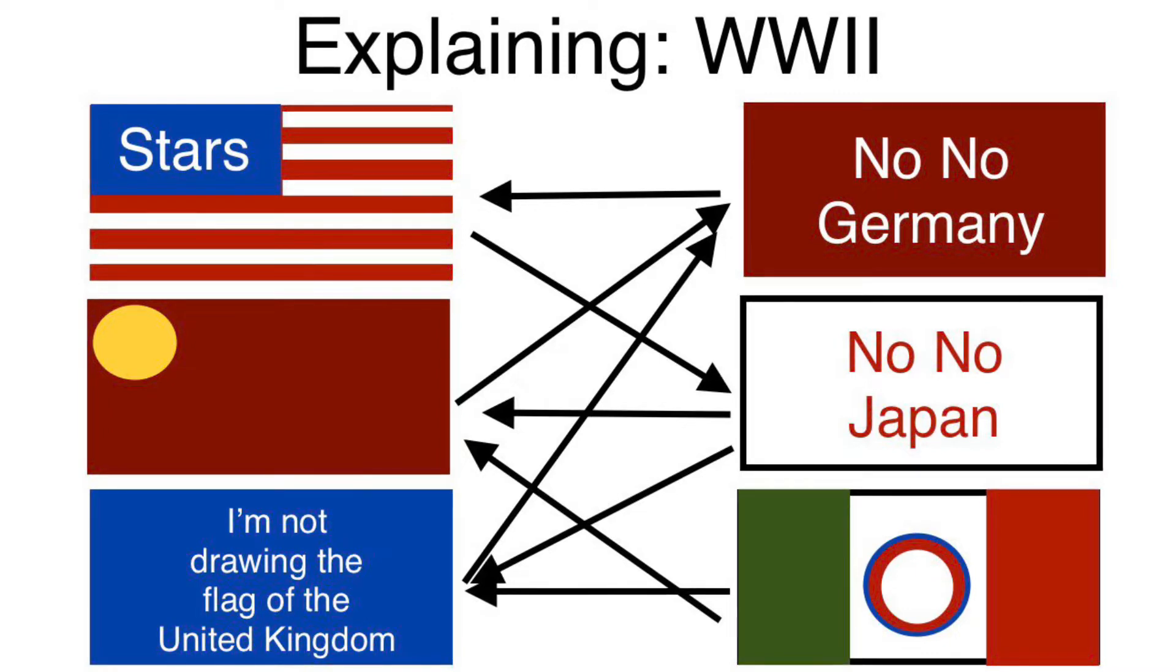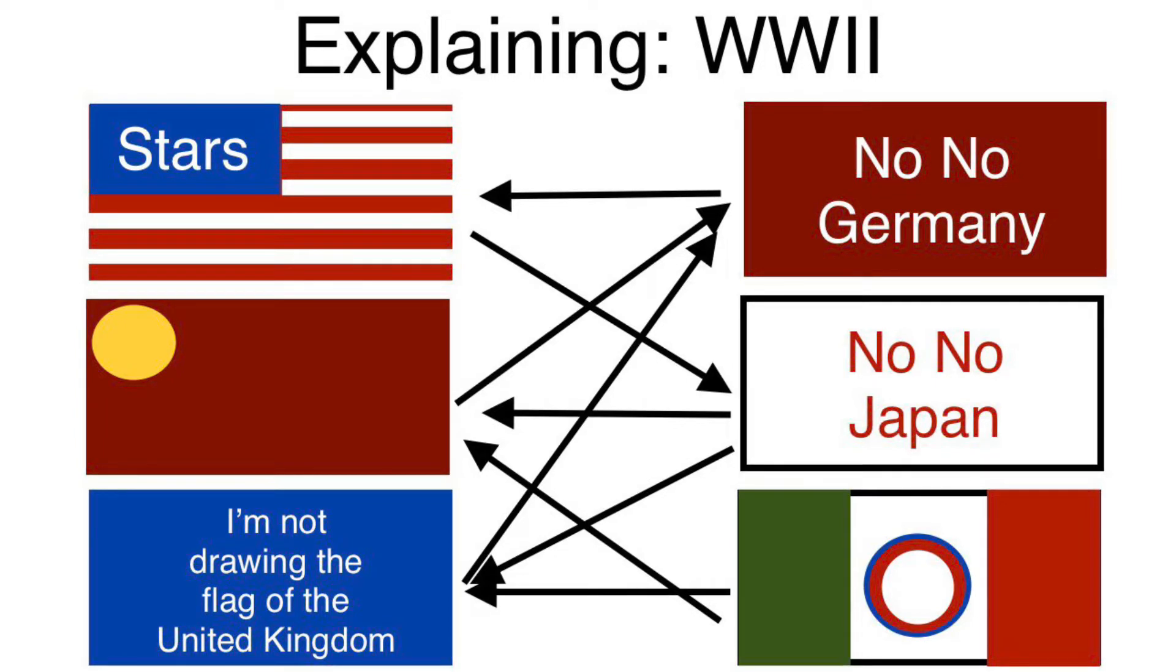A few weeks after the German invasion began, the Soviets would follow suit and would also invade Poland. The Germans would quickly roll over Poland using their tactics known as Blitzkrieg.